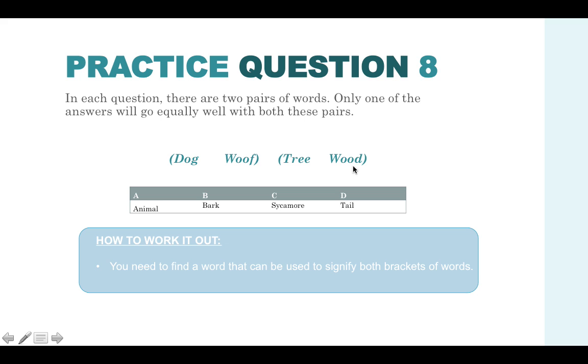We've got dog, woof, tree and wood. We know that answer option A cannot be applied to the second bracket. So we know we can eliminate this answer. Dog, woof, bark. Well, yes, that does make sense. Tree and wood. Well, trees are made of bark and bark is a type of wood. So in actual fact, the answer is B. And again, you can just simply rule these out by seeing if they work with both sets of brackets. Tail obviously doesn't work with this one. And sycamore obviously doesn't work with this one. So your answer is B.